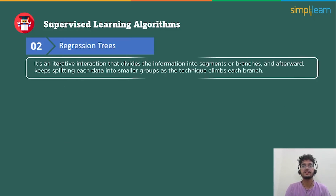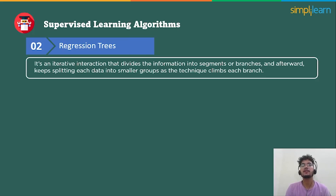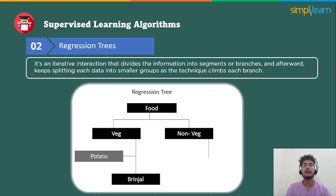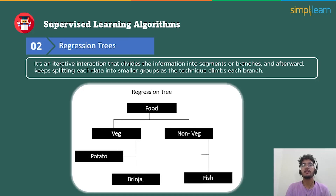A regression tree is built through a cycle known as binary recursive partitioning, which is an iterative process that divides the information into segments or branches, and afterward keeps splitting each data into smaller groups as the technique climbs each branch. These trees are used for dependent variables with continuous values. For example, a regression tree named 'food' divides into segments 'wedge' and 'non-wedge', and further keeps splitting into smaller groups.